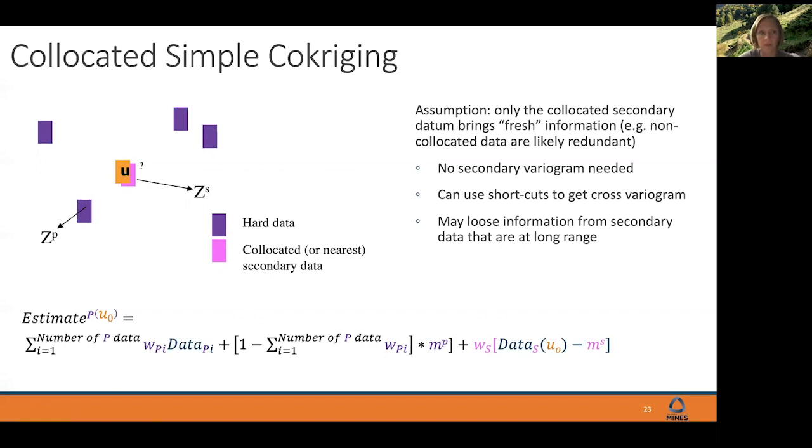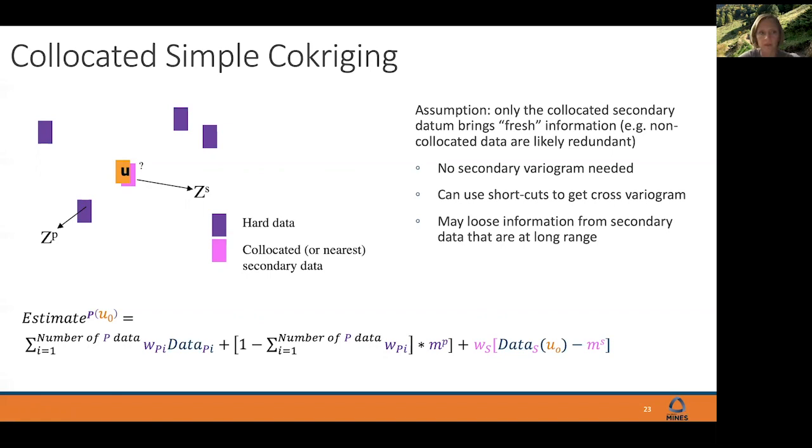In ordinary full co-kriging, we would consider all of that secondary data. This would require knowing our cross-variograms, which can be tedious to model. It would also require a very large system of equations. That's why oftentimes you'll hear of people using co-located simple co-kriging. They're actually only going to use the secondary data that is closest located to that particular location where you're trying to make an estimate. This is a nice visual of the co-kriging simulation result.